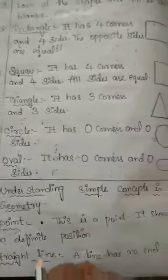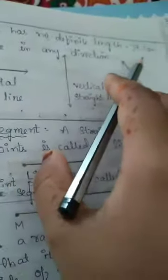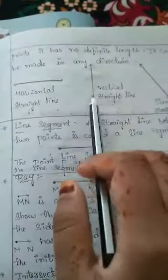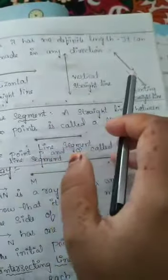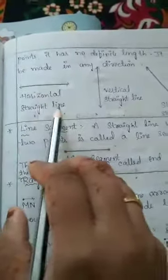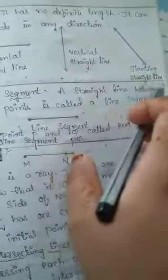Second is straight line. A line has no end points and has no definite length. It can be made in any direction: horizontal straight line, vertical straight line, and slanting straight line.